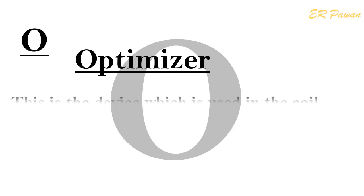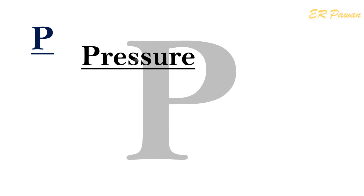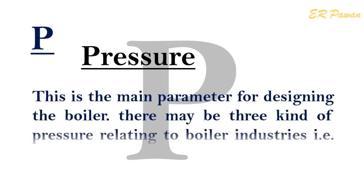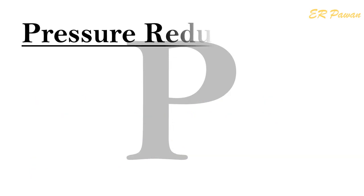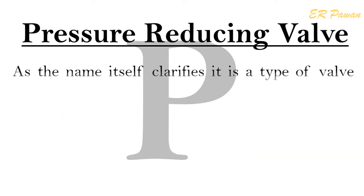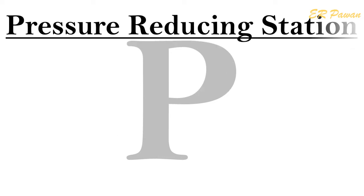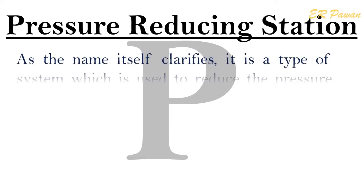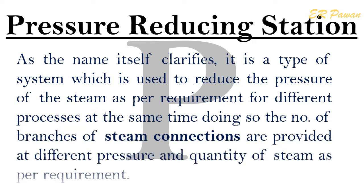O — Optimizer: This is the device used in a coil type boiler to increase the temperature of water before feeding it into the economizer. P — Pressure: This is the main parameter for designing the boiler. There are three kinds of pressure relating to boiler industries: design pressure, working pressure, and hydraulic pressure. Pressure Reducing Valve (PRV): As the name clarifies, it is a type of valve used to reduce the pressure of steam as per requirement. Different types and sizes are available.